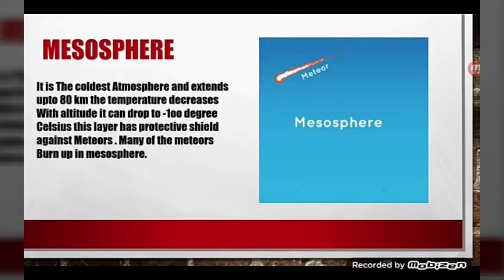The mesosphere is the coldest layer of the atmosphere. It extends up to a height of 80 kilometers. The temperature decreases with altitude and can drop to as low as minus 100 degrees Celsius. This layer acts as a protective shield against meteors — many meteors burn up in the mesosphere. In this slide, there is a word 'altitude,' which simply means height.